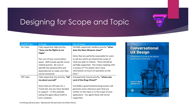Moving to the top right, we have things that are out of scope but on topic — partially supported and medium priority. For example, 'when does the Neon Museum close?' — perfectly reasonable for users to ask, but beyond the scope of what you plan to release. Reply with something like 'I'm afraid I don't have information on hours of operation at this time.' You need to be 100% sure about what's in scope versus out of scope on topic, and user testing will inform this.